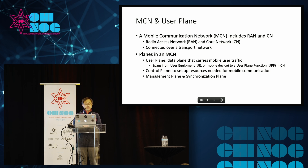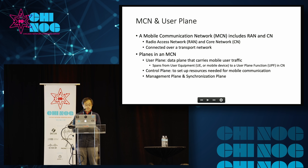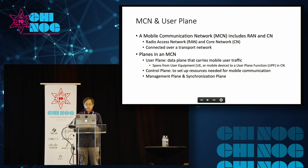There are many planes in this MCN. The first one is the user plane, which is the focus of this presentation. It is basically the data plane that carries mobile user traffic. It spans from the user equipment — UE is a 5G term, another word for it is the mobile device — to a user plane function, UPF, in the core network. Then there is a control plane used to set up resources for mobile communication, and management and synchronization planes, which we are going to skip.